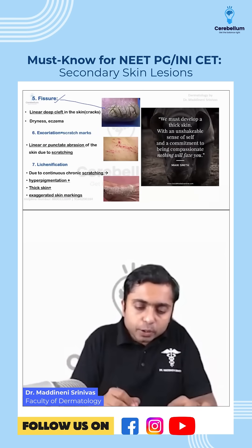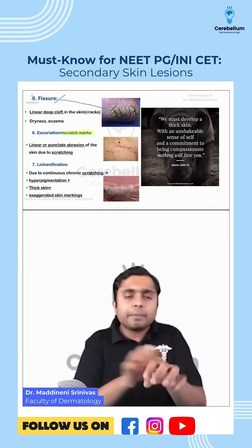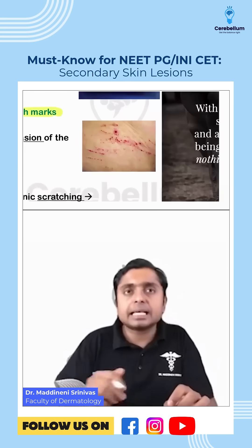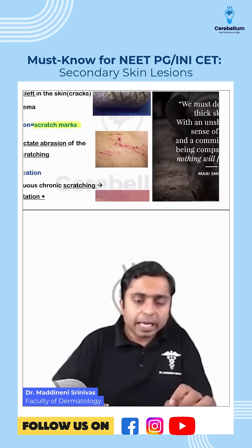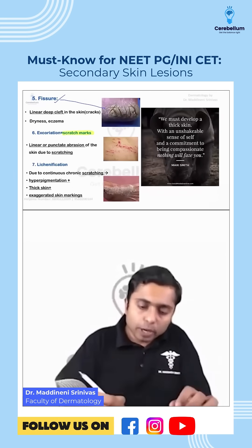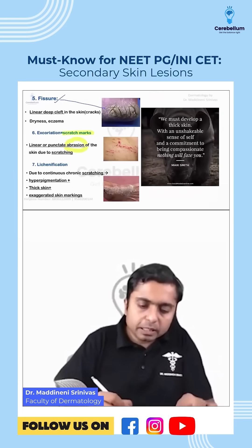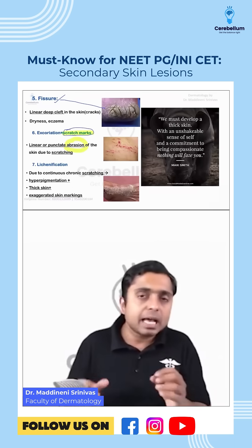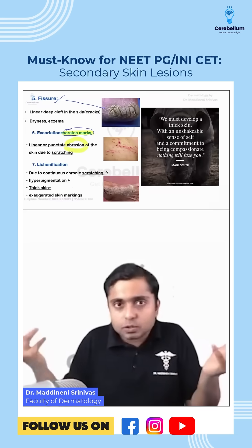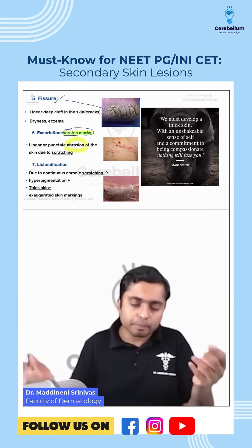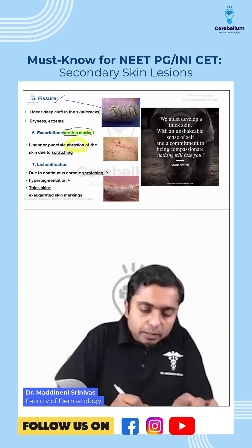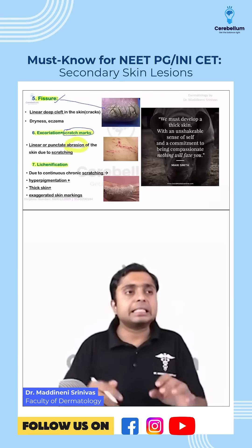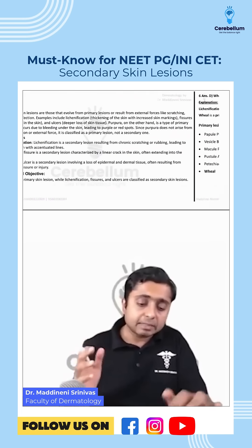One more term you need to remember: if a patient gets itching, they will do scratching. Scratch marks — linear or punctate lesions — will develop. These are basically abrasions, a term you might have heard in forensic medicine. But we poshify and call them excoriation marks. This is also a secondary skin lesion, and these are all the secondary skin lesions you should remember.